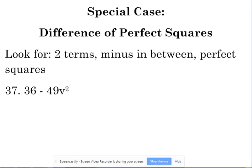The difference of perfect squares. The difference of perfect squares. Here we go, number 37. Number 37 on your sheet.